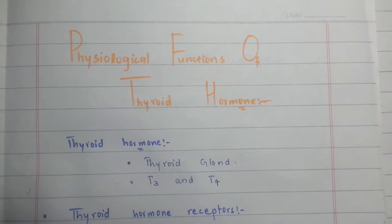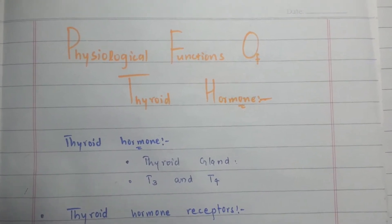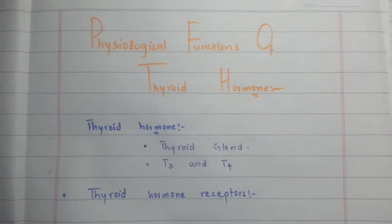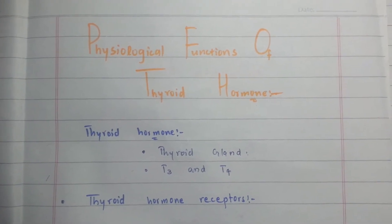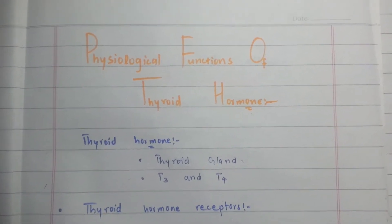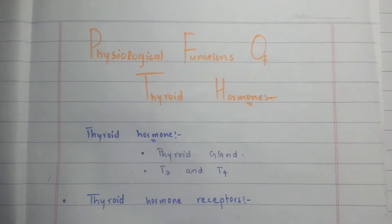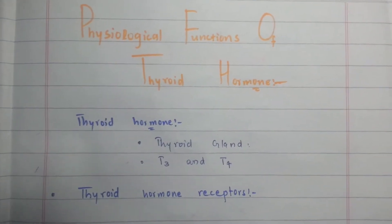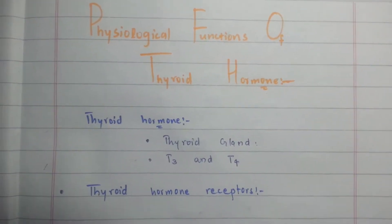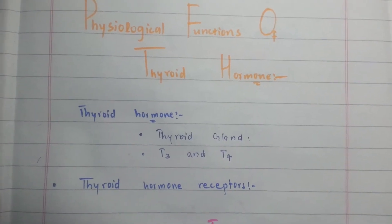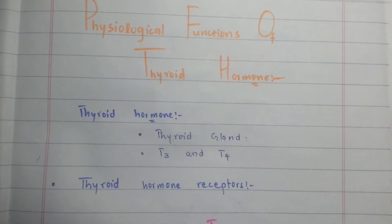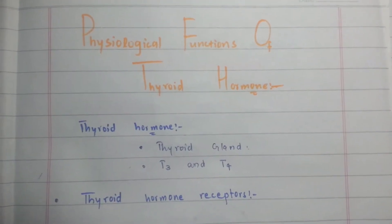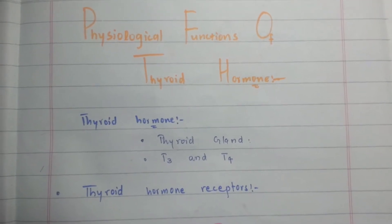Assalamu alaikum students. In this video I will discuss the physiological functions of the thyroid hormones. The thyroid hormones are secreted by the thyroid gland, which is the largest endocrine gland. The thyroid hormones are T3 and T4. T3 is called triiodothyronine, which makes up 10%, while T4 is tetraiodothyronine, which makes up 90%.